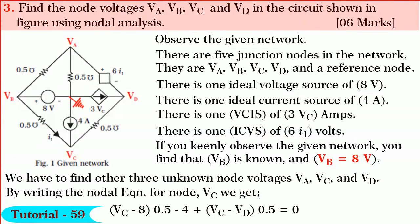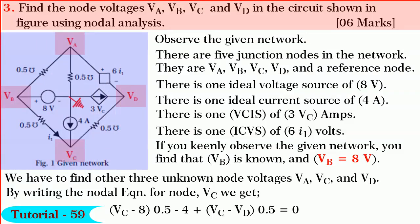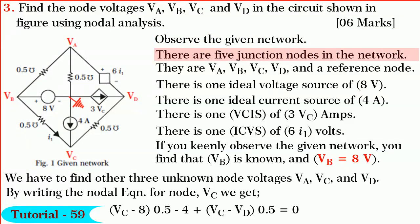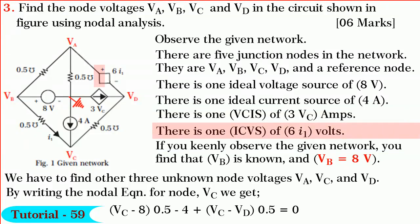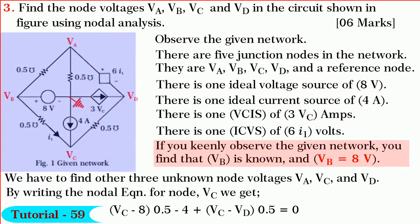Next we shall solve Question 3. In this question, we are required to find node voltages φA, φB, φC, and φD in the circuit shown in figure using nodal analysis. Observe the given network. There are 5 junction nodes in the network: φA, φB, φC, φD, and a reference node. There is one ideal voltage source of 8 volts in one branch, one ideal current source of 4 amperes in another branch, and one current-controlled voltage source of 6i1 volts in another branch. If we keenly observe the given network, we find that φB is known and φB is equal to 8 volts.